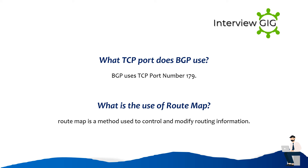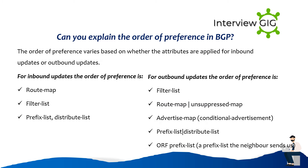What is the use of route map? Route map is a method used to control and modify routing information. Can you explain the order of preference in BGP? The order of preference varies based on whether the attributes are applied for inbound or outbound updates. For inbound updates the order is: Route map, Filter list, Prefix list, Distribute list. For outbound updates the order is: Filter list, Route map, Unsuppress map, Advertise map, Conditional advertisement, Prefix list, Distribute list, ORF prefix list.